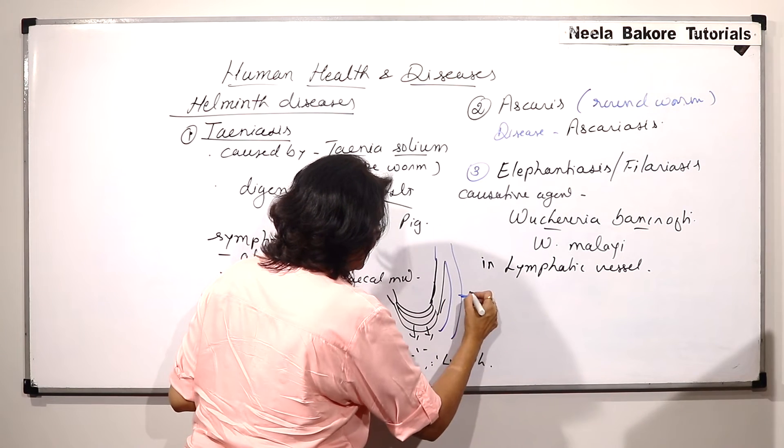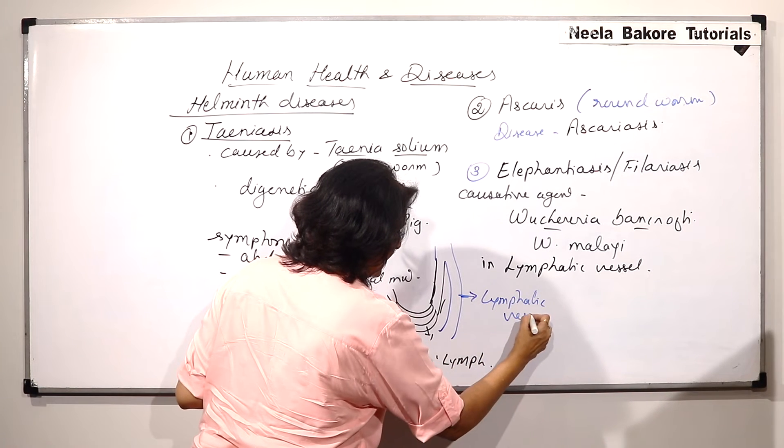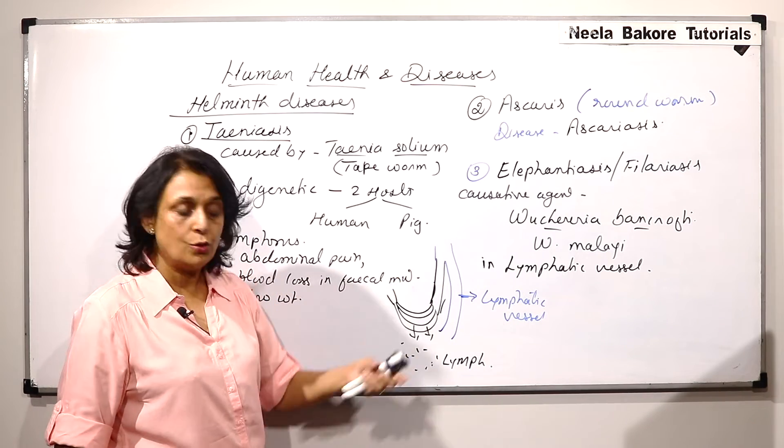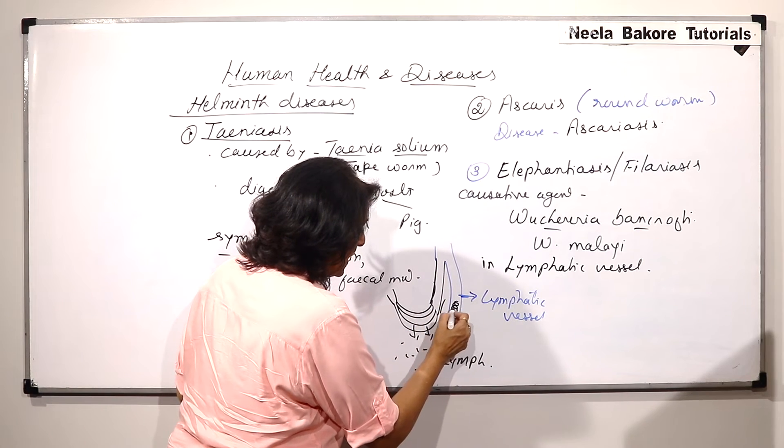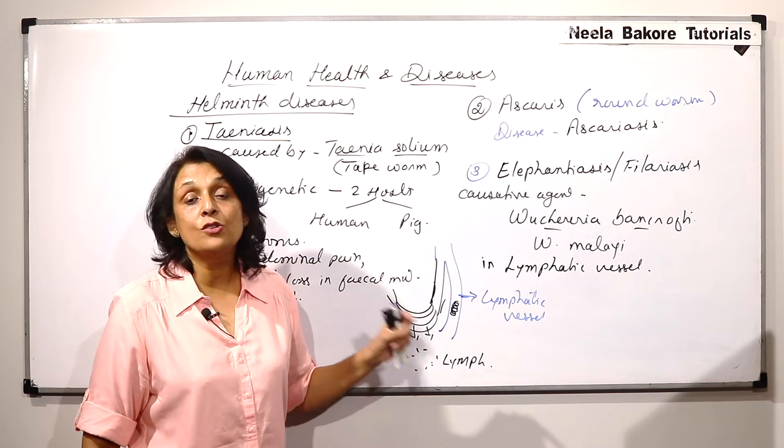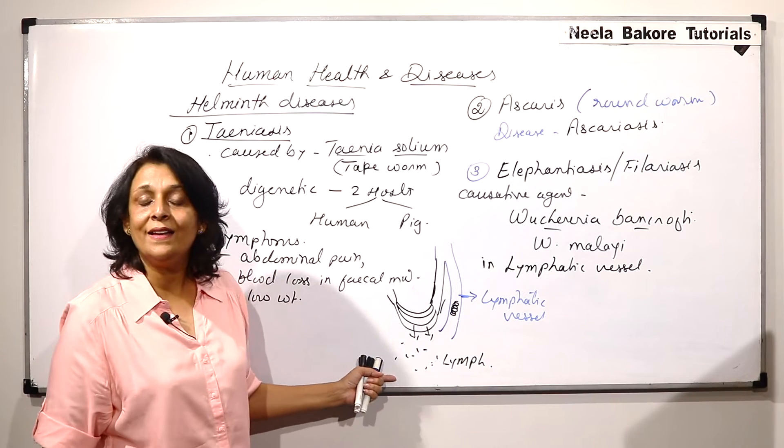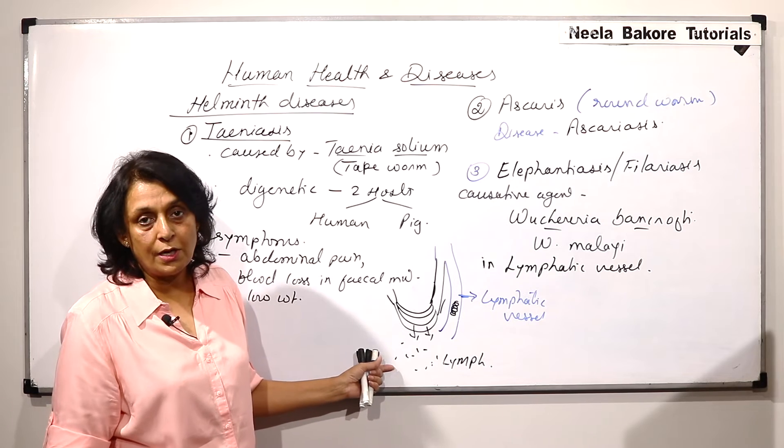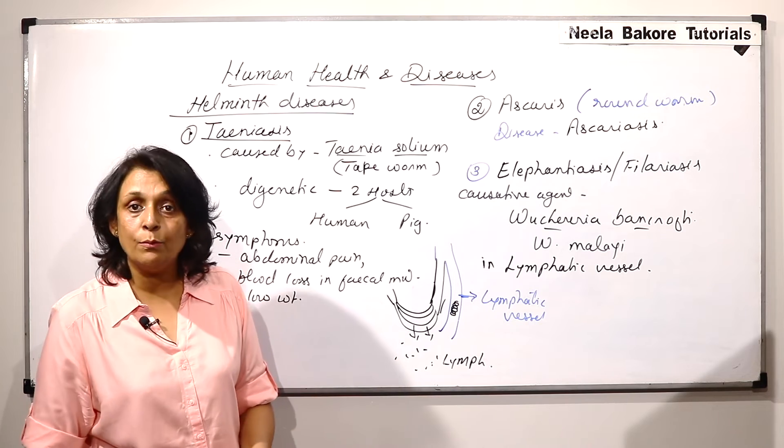Now, this lymph is ultimately poured into the main circulation by the lymphatic vessel. So, the lymphatic vessel is going to take this lymph and ultimately pour it into the blood vessel. But if the worm is here, the Filaria worm is here, then it is going to block that lymphatic vessel. So, that fluid which is accumulating here is not going to get back into our main circulation. Because of this fluid accumulating here, there will be swelling in that body part.